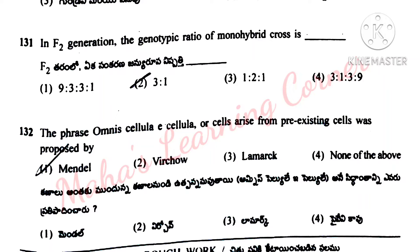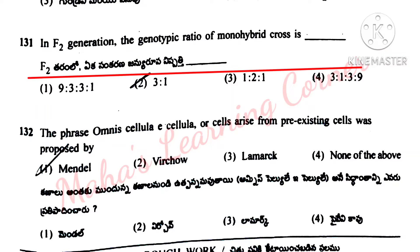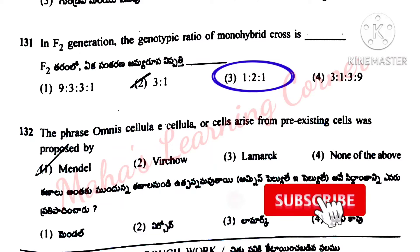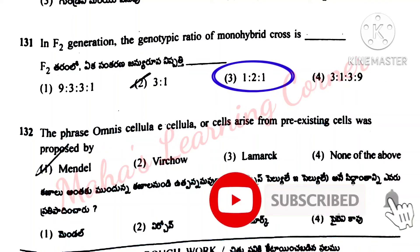In F2 generation the genotypic ratio of monohybrid crosses. Options: 9:3:3:1, 3:1, 1:2:1, 3:1:3:9. Correct answer option 3: 1:2:1.